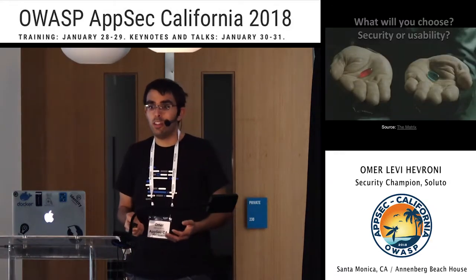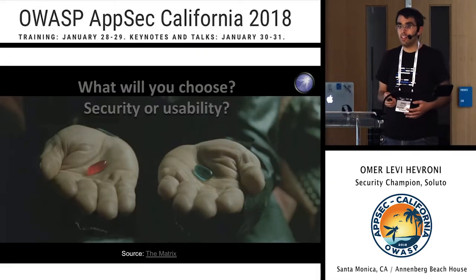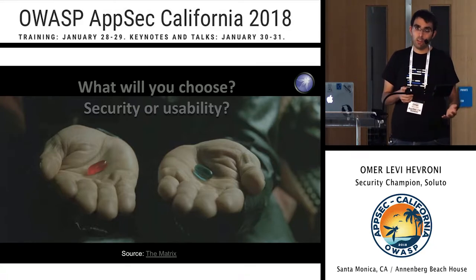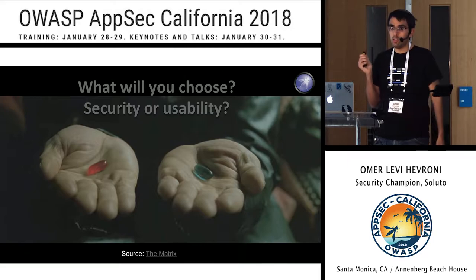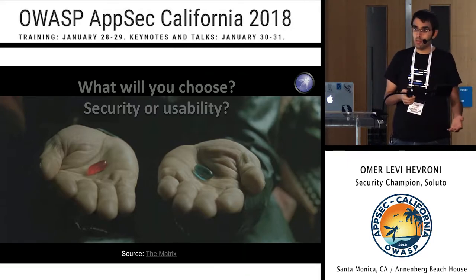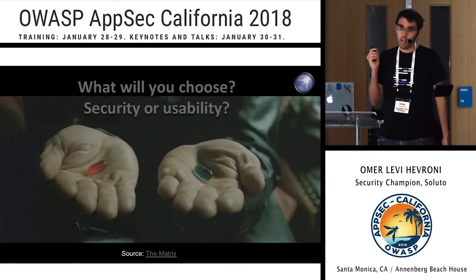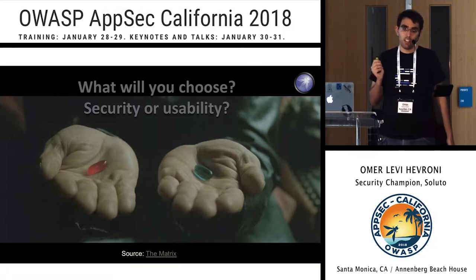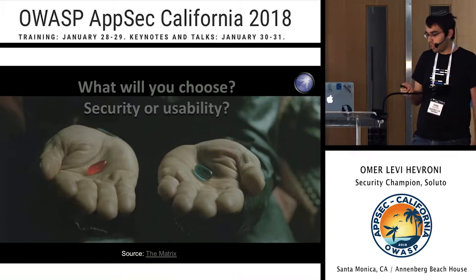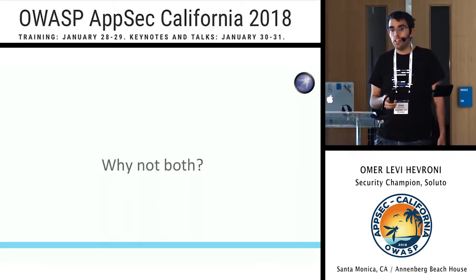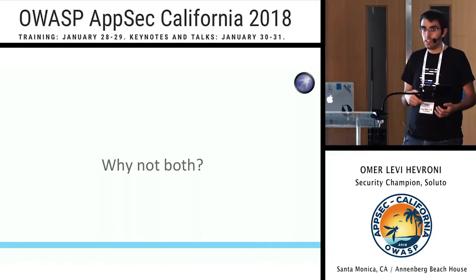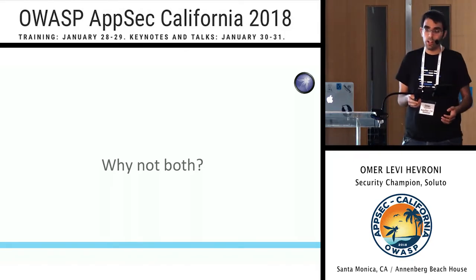So basically we had to choose between security and usability. Either we choose security and add authentication but affect the user experience, or we choose usability, don't add authentication, have great user experience and won't lose users - but the app will not be secured. And it's a really, really big security flaw to launch an app without any authentication. We want to have both security and usability, so we decided we need to find a new way to perform authentication - a way to authenticate the user without affecting the user experience. Authentication without authentication.